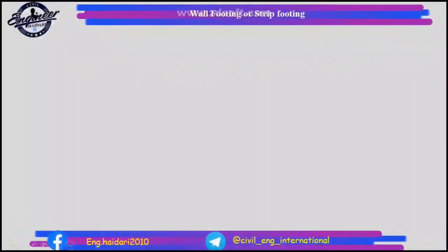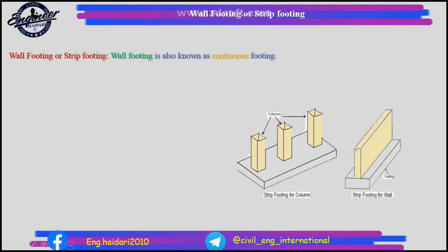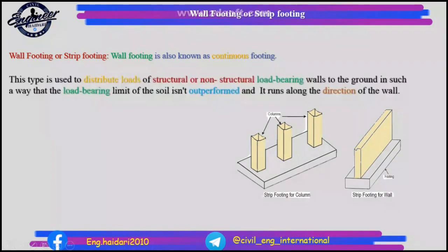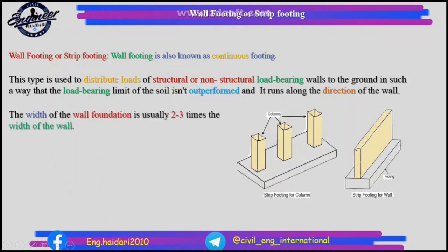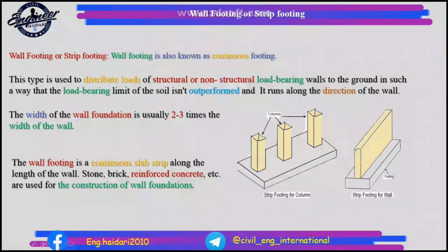Wall footing or strip footing: wall footing is also known as continuous footing. This type is used to distribute loads of structural or non-structural load-bearing walls to the ground such that the load-bearing limit of the soil is not exceeded, and it runs along the direction of the wall. The width of the wall foundation is usually two to three times the width of the wall. The wall footing is a continuous slab strip along the length of the wall. Stone, brick, reinforced concrete, etc. are used for its construction.